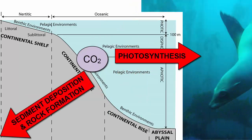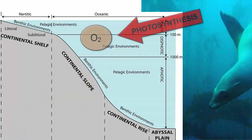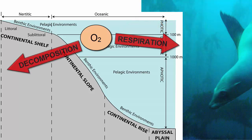Meanwhile, processes that remove carbon dioxide include photosynthesis and sediment deposition and burial. Conversely, oxygen is produced through photosynthesis and removed through decomposition and respiration.